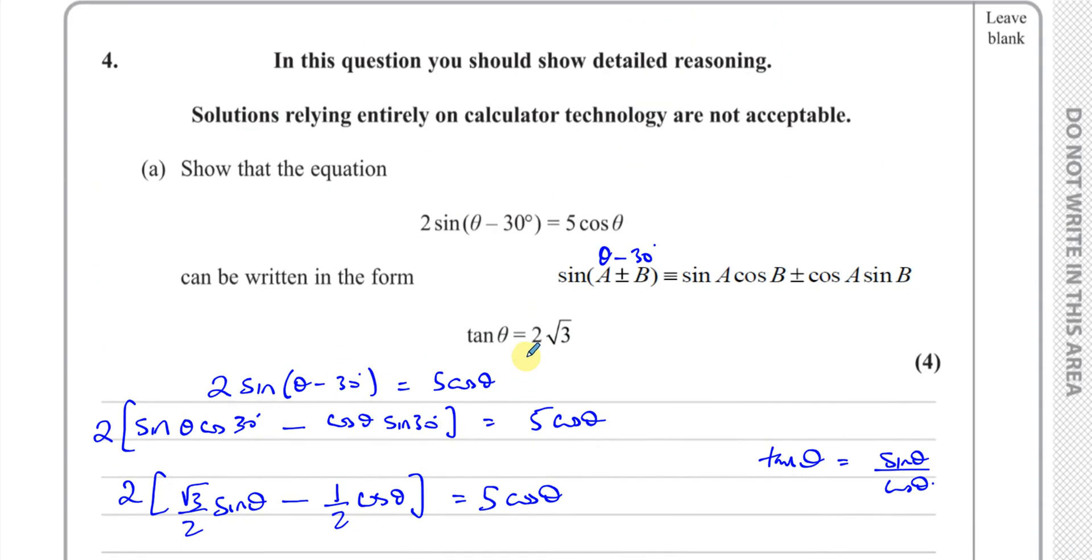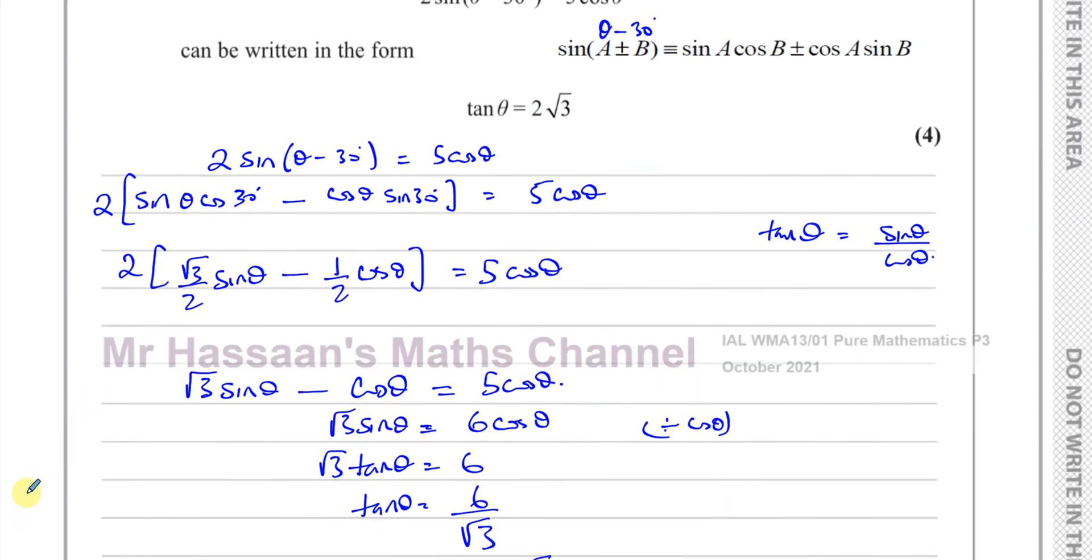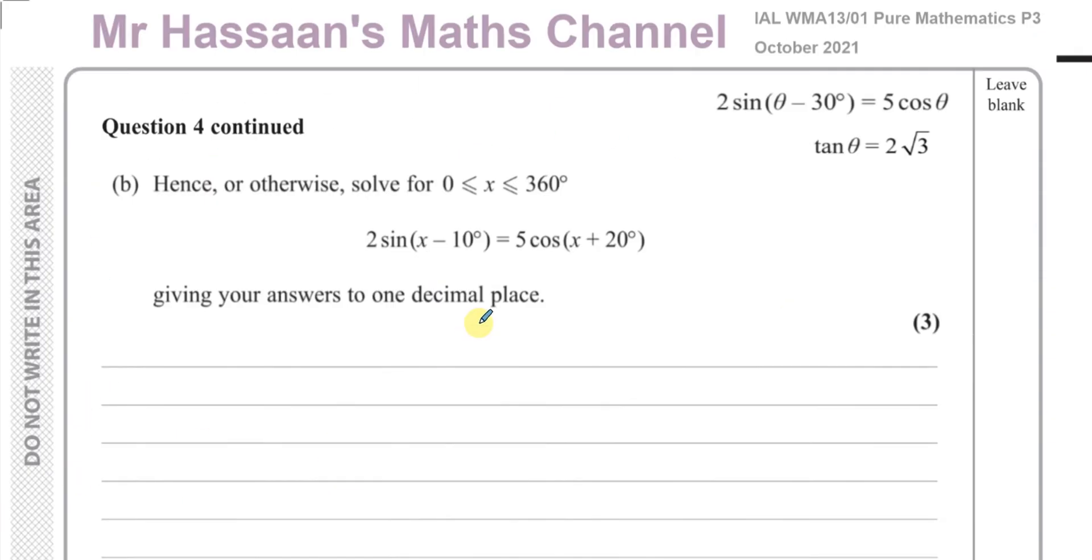Okay, so there's the answer to part A. Now going on to part B, it says hence or otherwise solve for x between 0 and 360°, the equation 2sin(x - 10°) = 5cos(x + 20°).